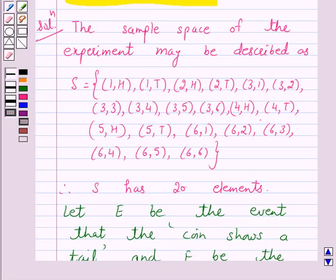So, E is the set consisting of elements (1,T), (2,T), (4,T), (5,T), and F is the set consisting of elements (3,1), (3,2), (3,3), (3,4), (3,5), (3,6), (6,3).